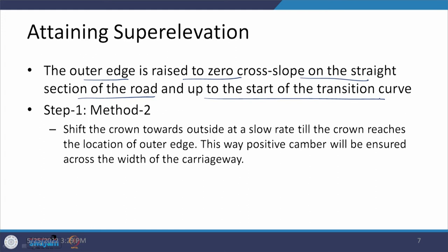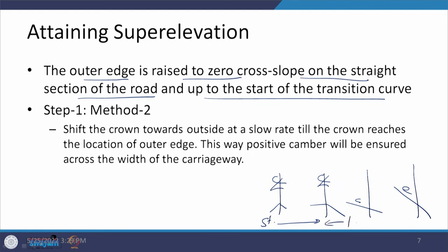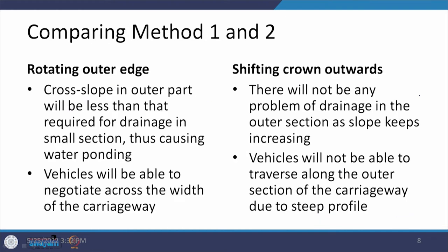If a transition curve has been provided, by the start of the transition curve the profile goes from the cambered form to flat outer edge, then to uniform C percent, and finally to E percent. The merits and demerits shown in the diagrams are now listed: the cross slope in the outer part will be less than required for drainage in a small section, thus causing water ponding — this needs to be taken care of. But vehicles will be able to negotiate across the full width of the carriageway.